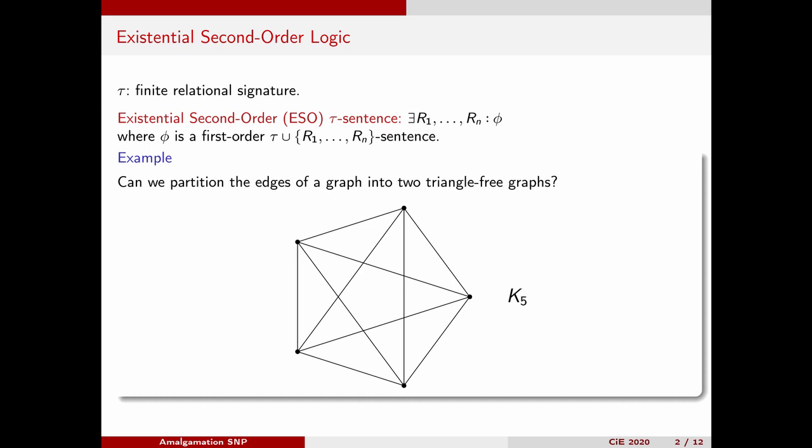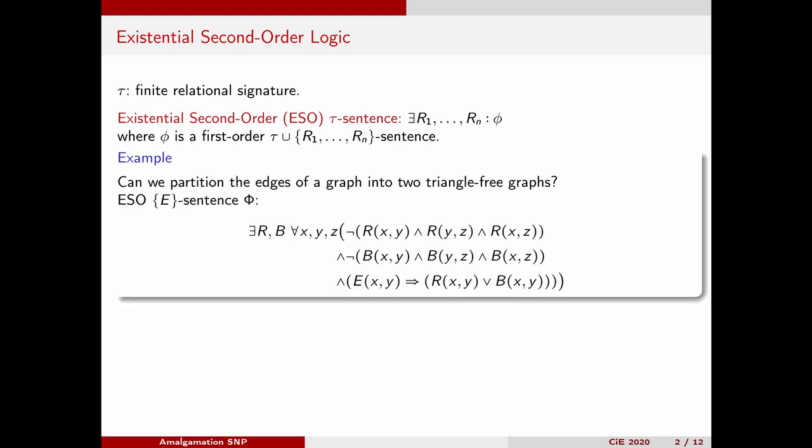For example, we can write down an existential second-order sentence which holds on a given graph if and only if the edges can be partitioned into two triangle-free graphs. This can be done by quantifying over two binary relations R and B, and the first-order part states that R contains no triangles, B contains no triangles, and every edge of the graph is either in R or in B.